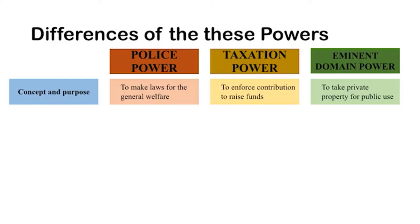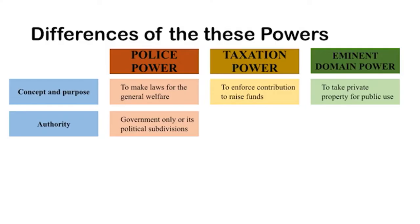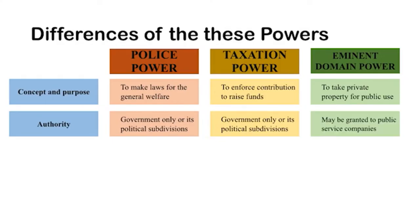With just compensation to the owner. As to authority: police power can only be exercised by the government or its political subdivisions and cannot be delegated to private entities. Taxation power is the same — only the government can impose taxes. However, eminent domain power may be granted to public service companies; for example, in the construction of roads or national highways, the government can delegate the power to take private property to private corporations doing the construction.